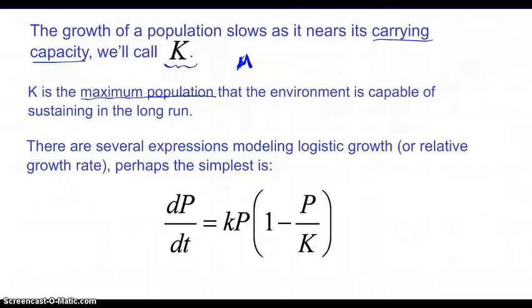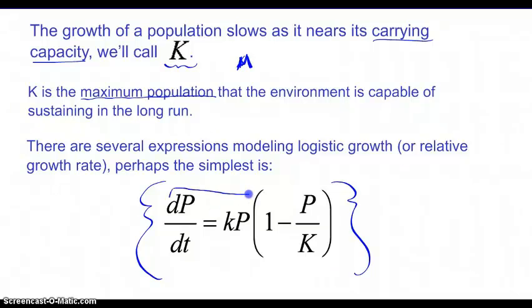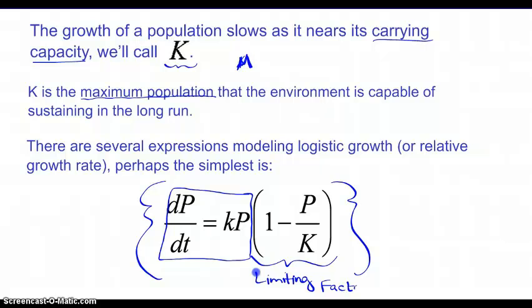There are several expressions that model logistic growth or relative growth rate, but the one we'll encounter most often on the AP test is the simplest and most intuitive. It includes the exponential growth term and a limiting factor. The limiting factor is one minus p over K — it's a ratio of the current population to the carrying capacity, and it determines the rate of growth of the population over time.